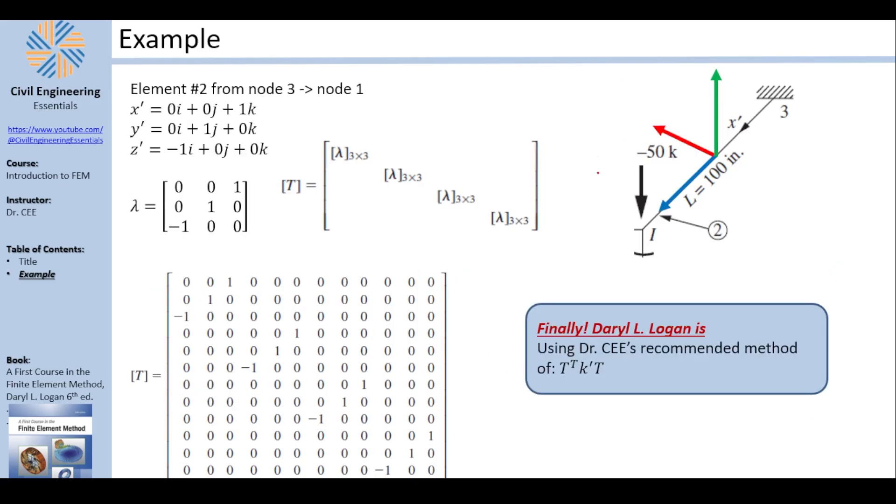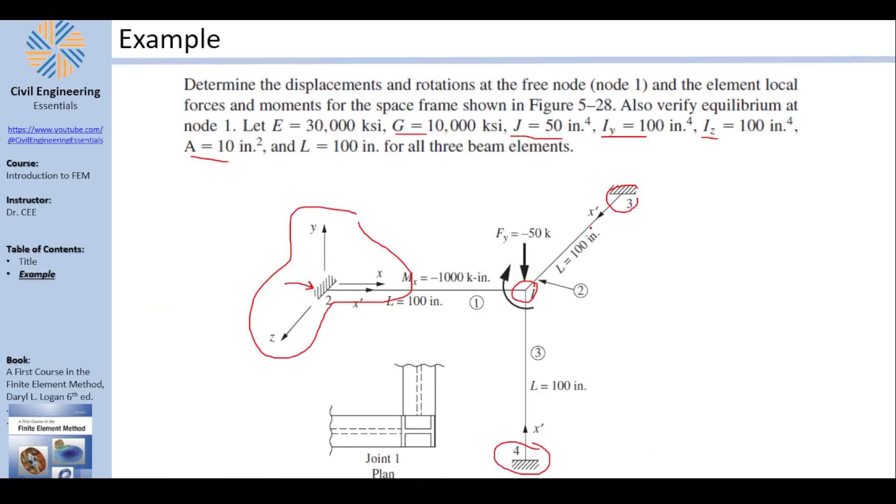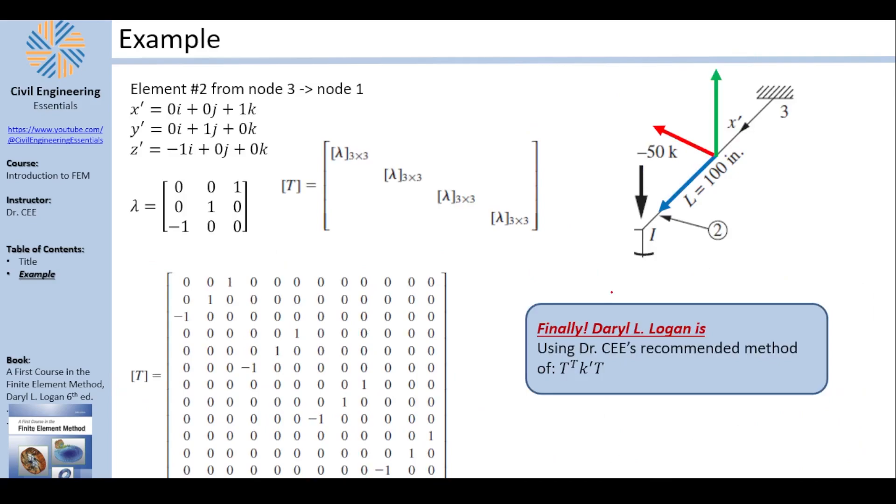For element 2, it's the same thing. Just so you understand, this is our structure: element 1, element 2, and element 3. For element 2, we're going to follow the same idea. It connects node 3 to node 1. You can see from 3 to 1, so the local X axis is the blue one.